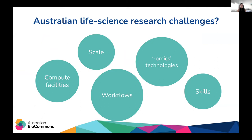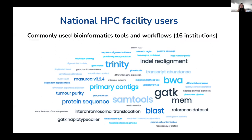At the start of the project, we wanted to know what the landscape was like for Australian life science researchers and their specific challenges — what sorts of compute facilities did the typical Australian researcher have access to, whether cloud, HPC, or GUI; whether this was sufficient for their needs; whether there were publicly available workflows deployable on their systems; what omics technologies they were working with; and what skills were required. Because we wanted to know the challenges faced by large-scale users specifically, we were particularly interested in the types of workflows and tools used by national HPC facility users, including NCI, Pawsey, and the University of Queensland's Flashlite systems.